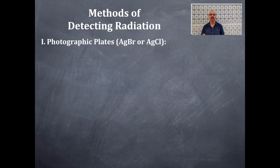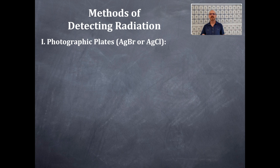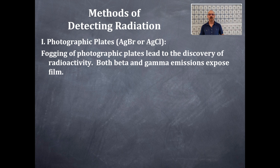Number one: photographic plates, using either silver bromide or silver chloride. If you've ever taken a photo with film — not digital, but film — that's typically using silver chloride. The grain size is either large or small depending on how sensitive the film is. Fogging of photographic plates led to the discovery of radioactivity. Both beta and gamma emissions expose film.